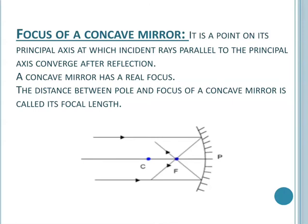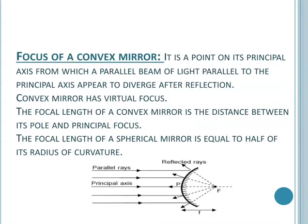A concave mirror has a real focus because all the parallel rays intersect each other at a point on the principal axis. Now, focal length: the distance between pole P and the focus F is called focal length, and it is denoted by small f.